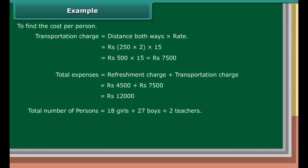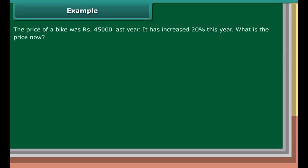Total number of persons equals 18 girls plus 27 boys plus 2 teachers, which is equal to 47 persons. The amount spent for one person is equal to rupees 12,000 upon 47, which is equal to rupees 255 approximately.